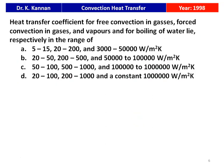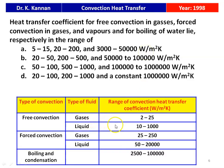The heat transfer coefficient for free convection in gases, forced convection in gases and vapour, and boiling of water lie respectively in the range: 5 to 15, 20 to 200, and 3000 to 50,000. The standard ranges are: free convection 2 to 25, forced convection in gases 25 to 250, and boiling heat transfer 2500 to 100,000 W/m²K. Among the four options, the correct answer is option A: free convection 5 to 15, forced convection 20 to 200, and boiling 3000 to 50,000 W/m²K.